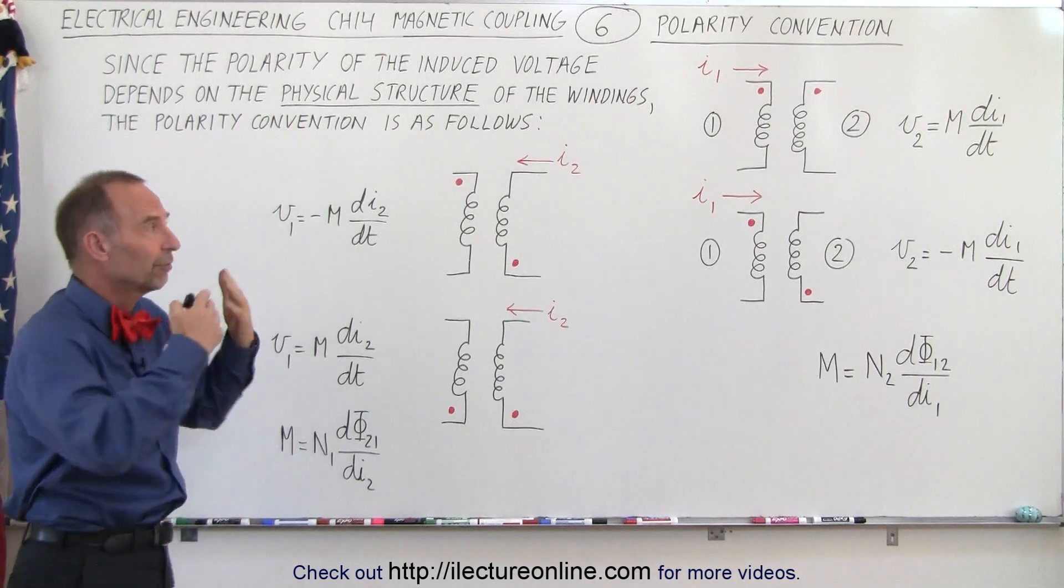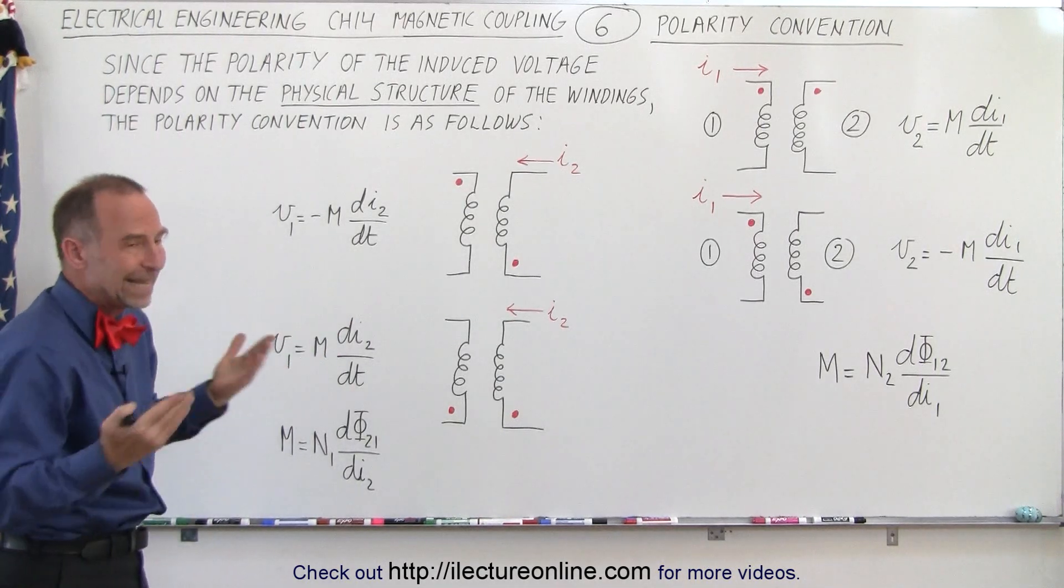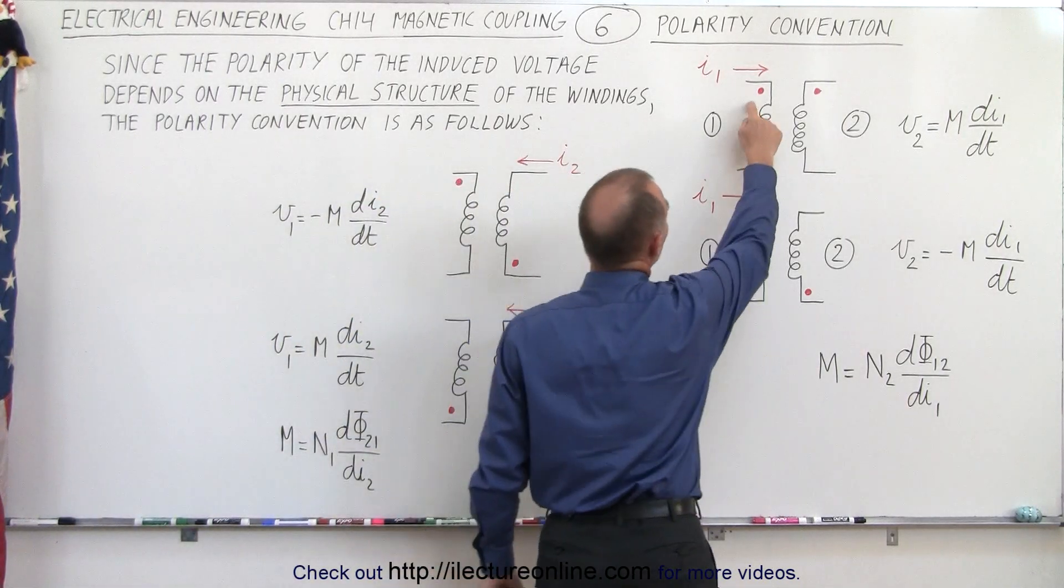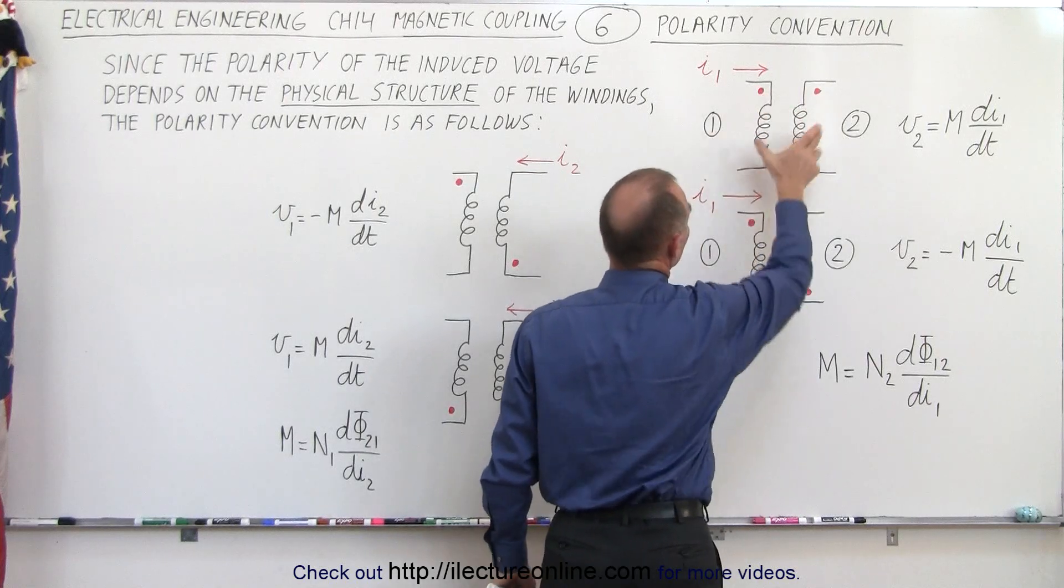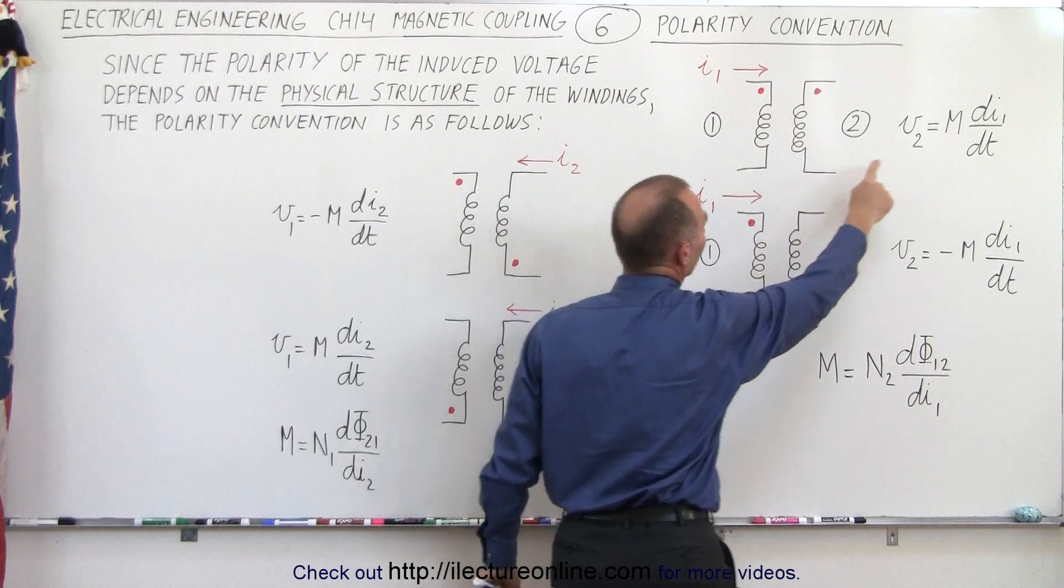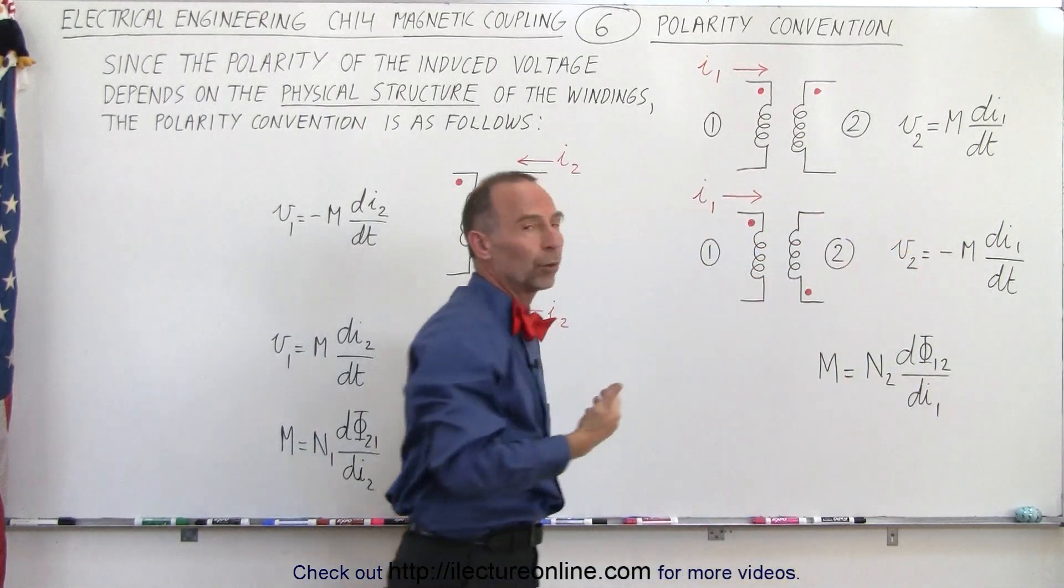So we have to come up with a convention on the circuits to indicate which way they are connected. And the convention is by using these dots right here. If the two dots appear on the same side as the inductor, then we have a straight across what we call induction.